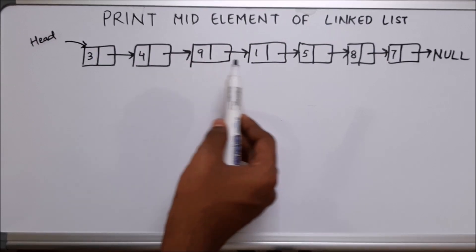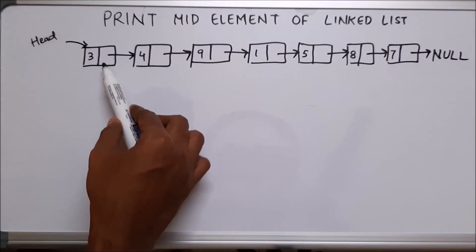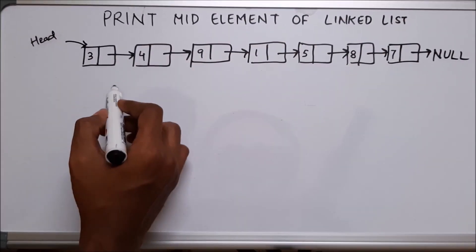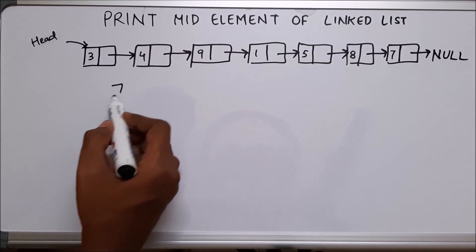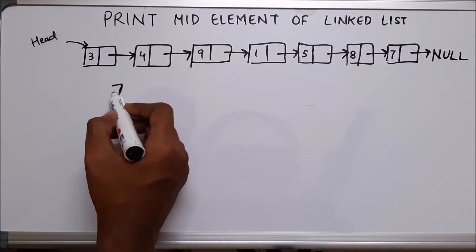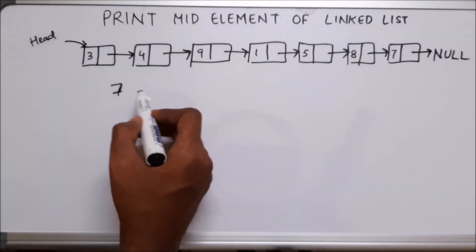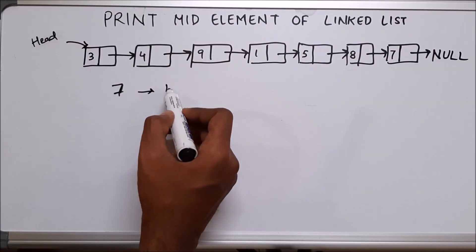We have a total of 1, 2, 3, 4, 5, 6, 7 — so a total of 7 nodes. The center one will be the fourth one.